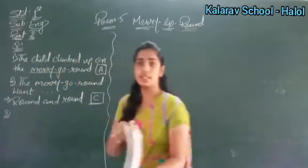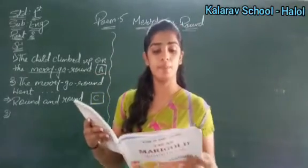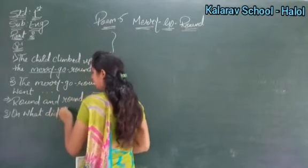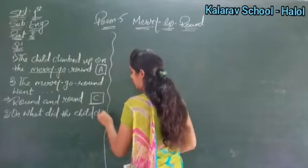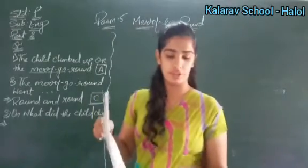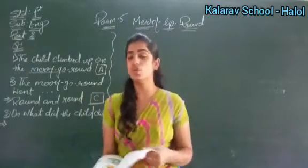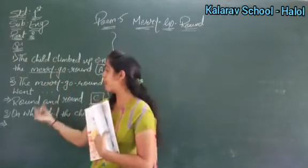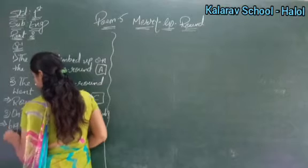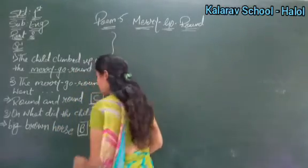Now moving further with the third number. Turn the page — dekho page 76. On what did the child climb? Options are: small white horse, big brown horse, big white horse, or small brown horse. The child on the merry-go-round climbed a big brown horse. So option B is correct. In the box, put B.